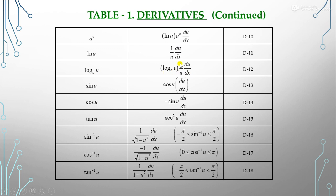For trigonometric functions: d/dx(sin u) = cos(u)·du/dx; d/dx(cos u) = −sin(u)·du/dx; d/dx(tan u) = sec²(u)·du/dx. For inverse trig: d/dx(sin⁻¹ u) = 1/√(1−u²)·du/dx; d/dx(cos⁻¹ u) = −1/√(1−u²)·du/dx; d/dx(tan⁻¹ u) = 1/(1+u²)·du/dx.